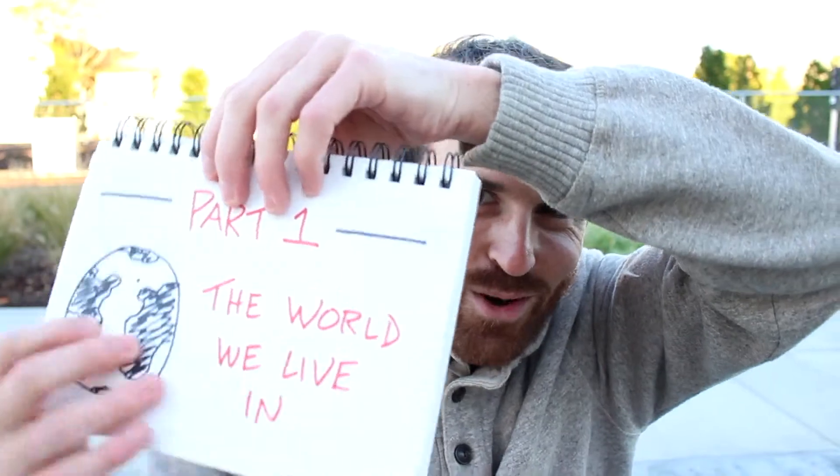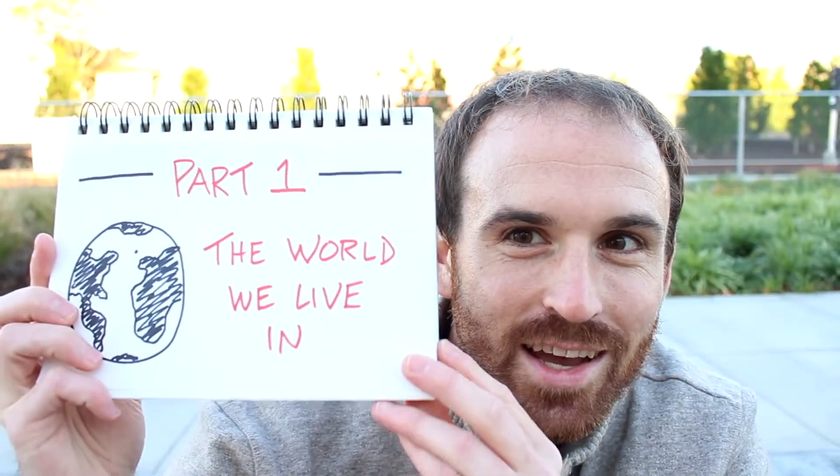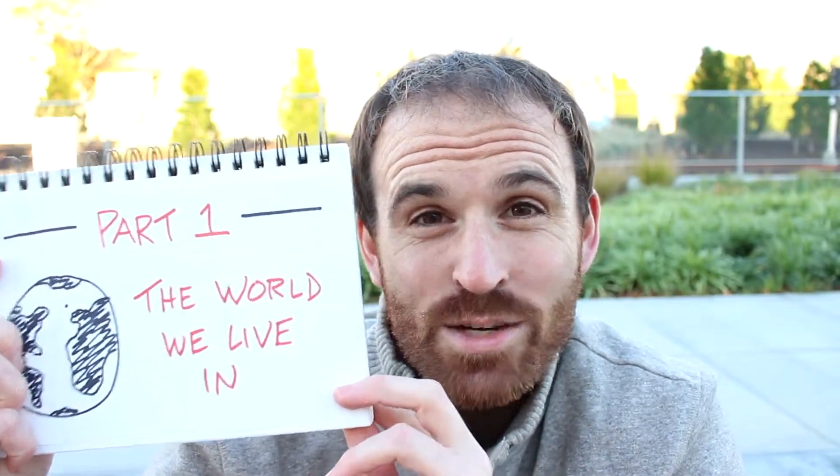In part number one, the goal is to set the stage by defining the world that we live in — coming to a common understanding of what the internet looks like right now, what the global economy looks like right now, so that we understand the space that we have to play with. The current conditions, the opportunities that are out there because of the current infrastructure, the way social dynamics are evolving, and what that might look like as it continues to evolve in the future.